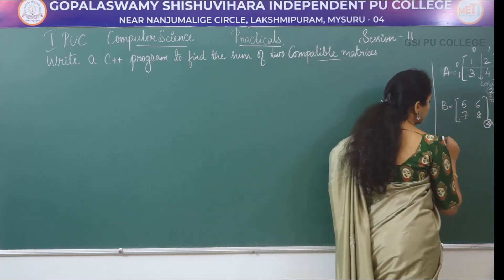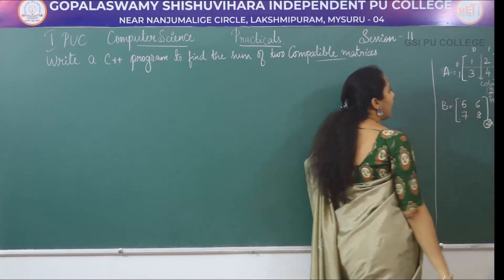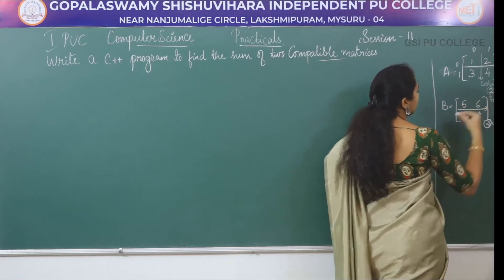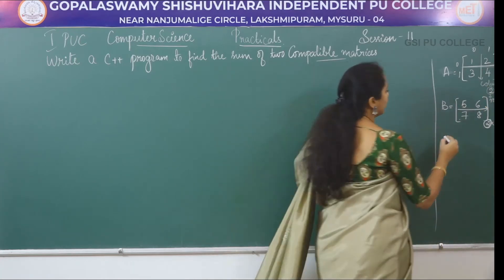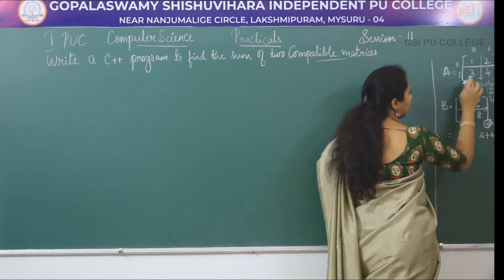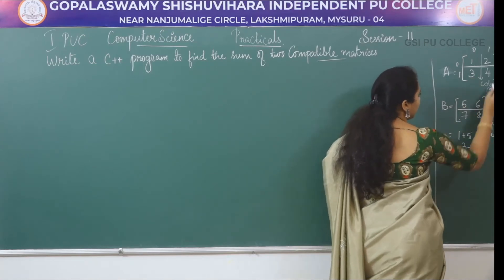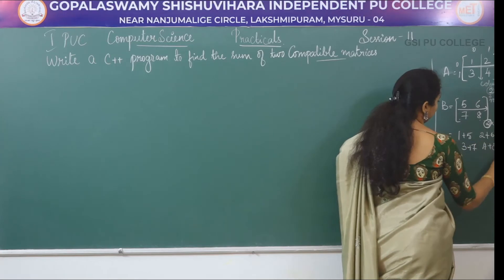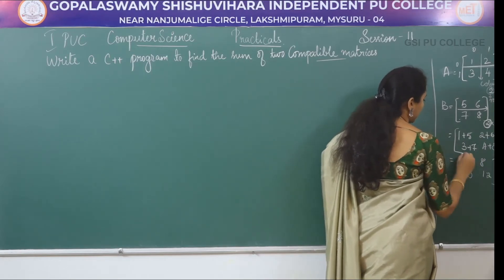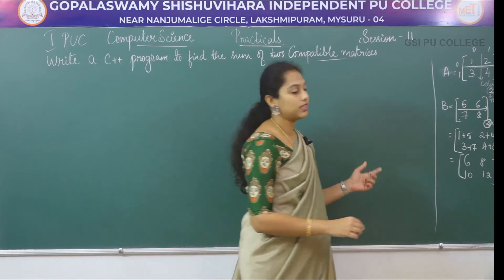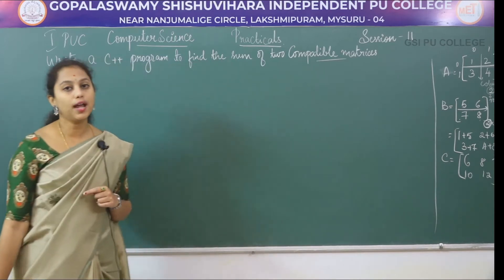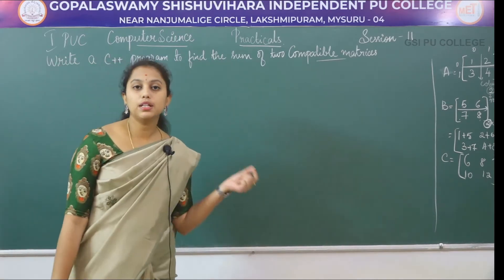So how to perform addition? First we add the elements of the first matrix with the corresponding elements of the second matrix: 1+5, 2+6, 3+7, 4+8, giving 6, 8, 10, and 12. The sum of the two matrices is stored in the variable C.